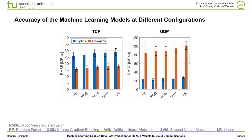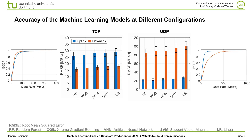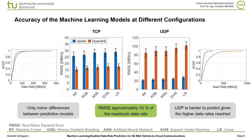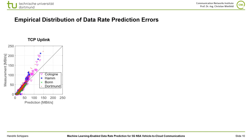On this slide, the resulting root-mean-squared error of the machine learning models — random forest, extreme gradient boosting, artificial neural network, support vector machine, and linear models — are displayed for the uplink and the downlink direction for both TCP and UDP. The prediction error is significantly higher for UDP downlink compared to TCP, due to the higher throughput reached by UDP, as can be seen by comparing the empirical cumulative distribution functions. The different prediction models differ only a little; however, the random forest consistently outperforms the other models and will be used in the following slides. A root-mean-squared error of 10% of the maximum data rate or less is reached in every configuration.